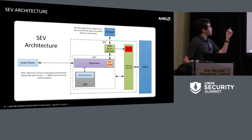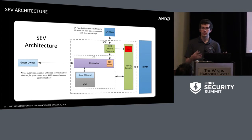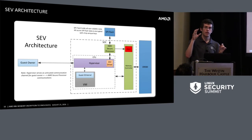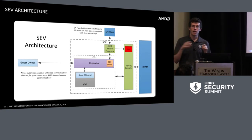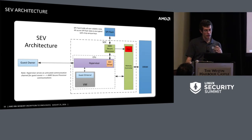The guest owner is a key player in this architecture, responsible for managing guest secrets and policy. Policy contains information about what is allowed — migration, debug, etc. The guest owner sets up a secure communication channel using a Diffie-Hellman protocol to the AMD Secure Processor on the SoC, authenticates the secure processor, and uses that secure channel to pass information related to setting up the VM.